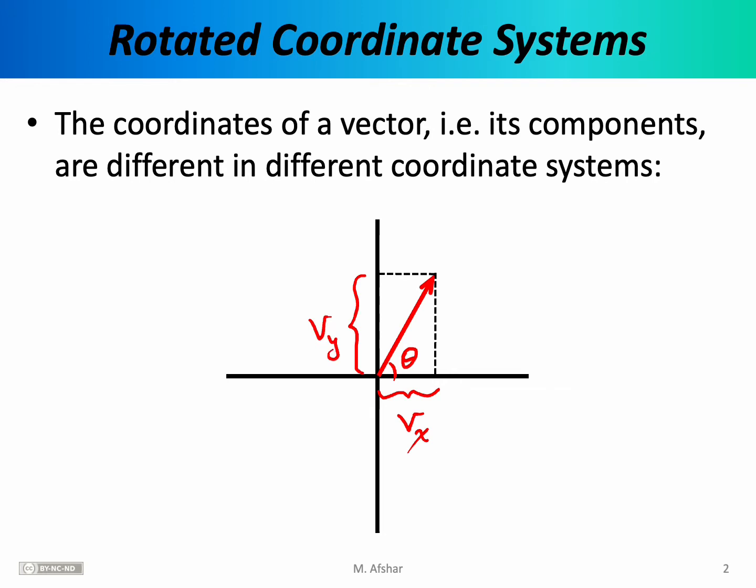We can use sines and cosines to figure out the lengths of these components. The point is that to calculate the components of this vector, we must create a right triangle with the vector as the hypotenuse. We need to know some angles and the length of the hypotenuse, and then use trigonometry to calculate these components.